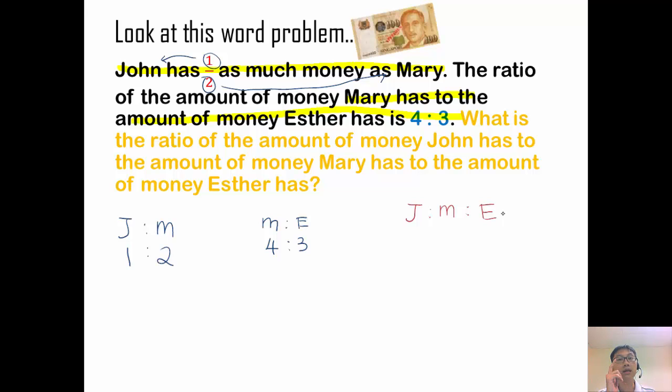Now in this case, we need to make them the same. So let's look. Which one is repeated? Which identity is repeated? Yes, Mary. In both ratios, Mary's identity is repeated. So this is what we call repeated identity. So can I make 2 and 4 the same? Oh yes, I can.